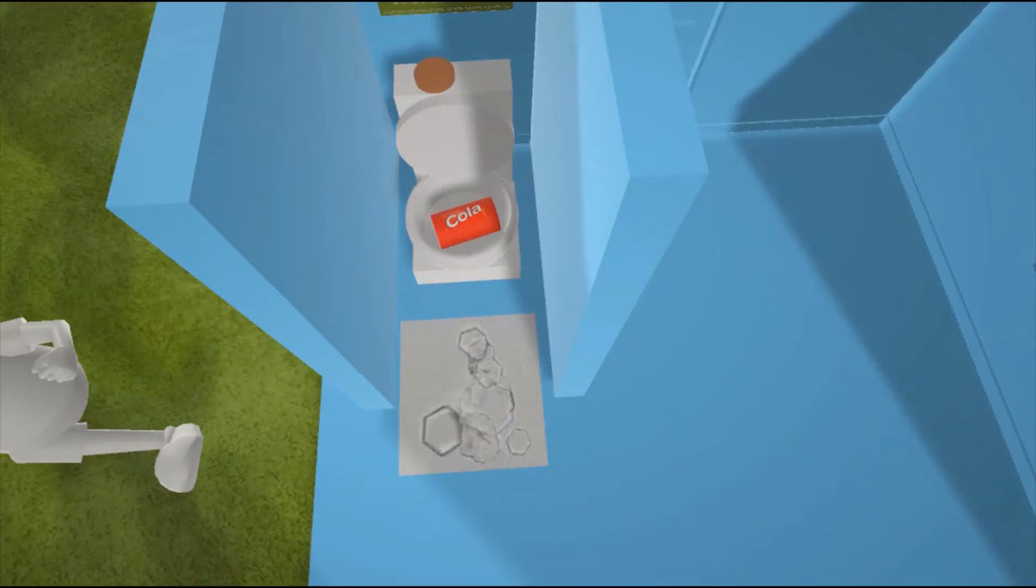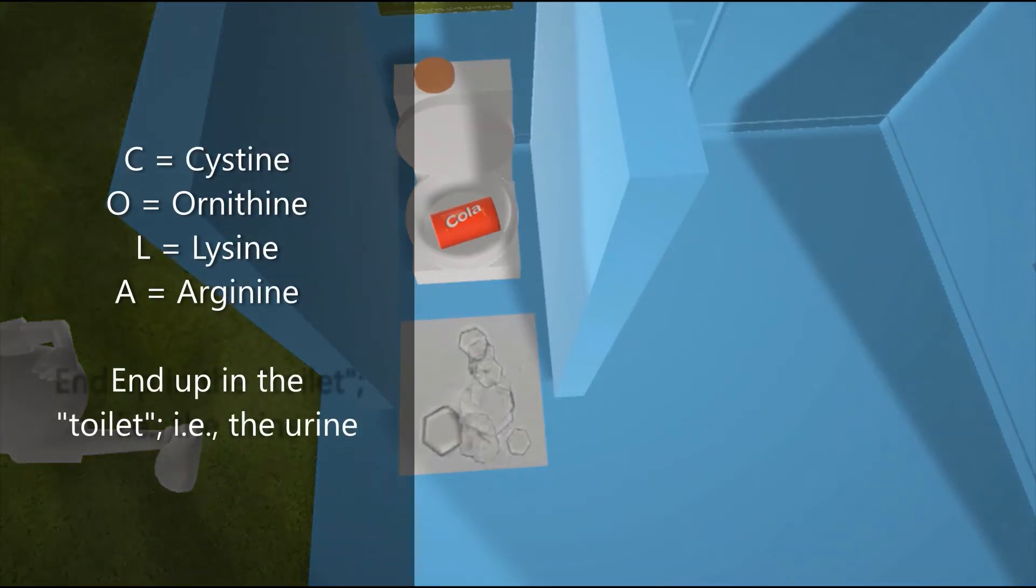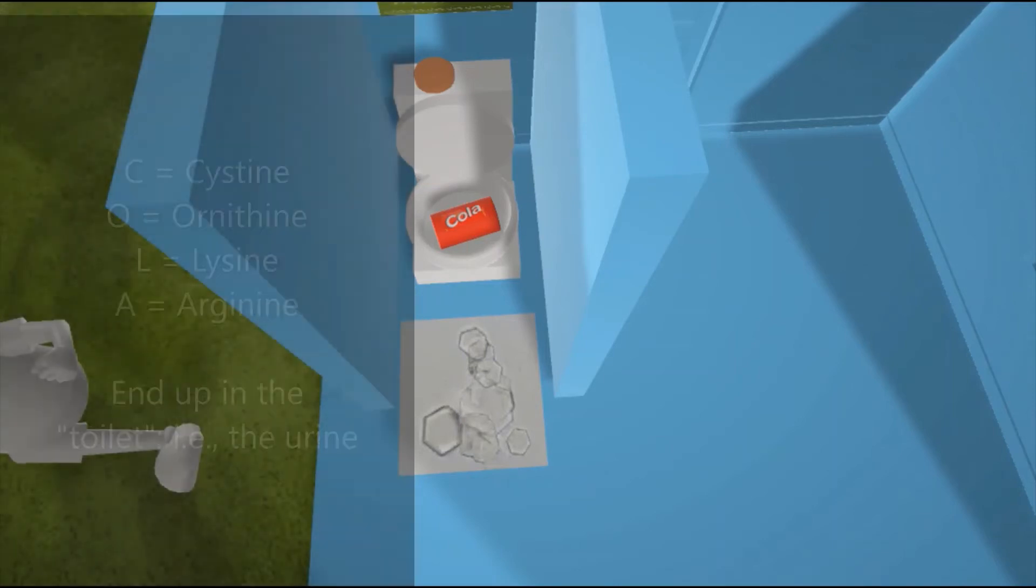Here in the toilet, we have COLA to represent the mnemonic for the four molecules which are not reabsorbed in Cystinuria. C for Cysteine, O for Ornithine, L for Lysine, and A for Arginine. Since these are not reabsorbed, they eventually end up in the toilet, or in the urine.